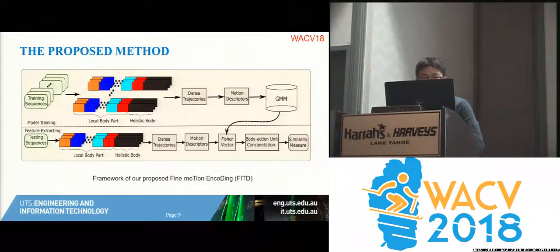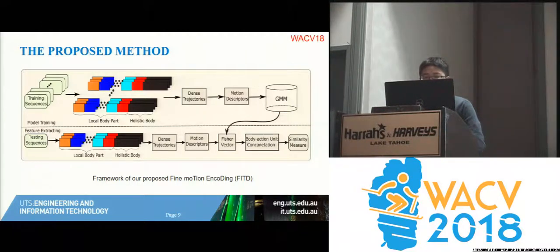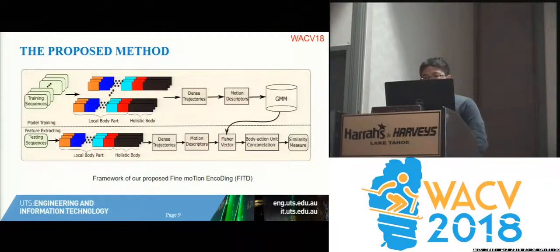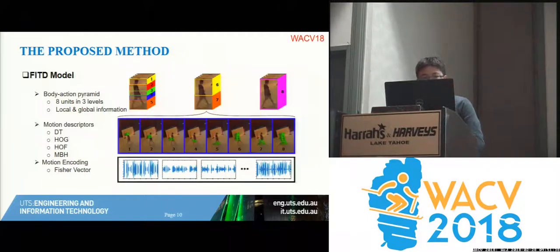Here is the proposed method: given videos to describe the person, we manually crop the bounding box of the person and divide it into several parts. We use optical flow to generate dense trajectories and extract features on top of the dense trajectories. Finally, we use bag-of-words models to describe the video.